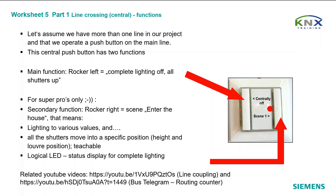Worksheet 5, Part 1: Line Crossing Central Functions. Let's assume we have more than one line in our project and that we operate a push button on the main line. This central push button has two functions: main function Rocker left equals complete lighting off and all shutters up. Secondary function Rocker right equals scene 'Enter the house', meaning lighting to various values and all shutters move into a specific position.